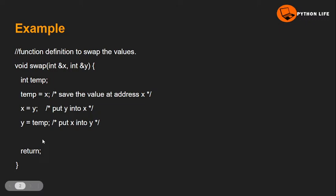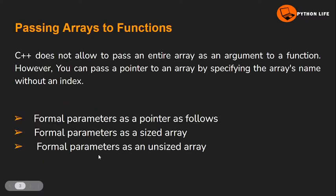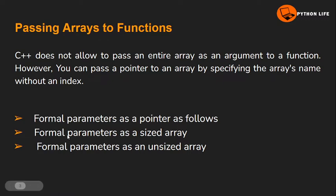Next, passing arrays to functions. In C++, passing an entire array as an argument is possible. There are three ways to do passing arrays to functions: formal parameters as a pointer, formal parameters as a sized array, and formal parameters as an unsized array.